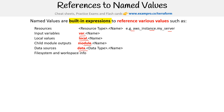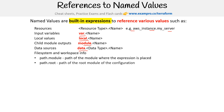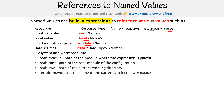For file system and workspace info, we have 'path.module' — this is the path of the module where the expression is placed. We have 'path.root' — this is the path of the root module of the configuration. We have 'path.cwd' — this is the path of the current working directory. In practice, the default CWD is the same as the root, so those would technically be the same. We also have 'terraform.workspace' — this is the name of the currently selected workspace.